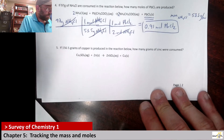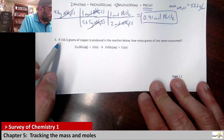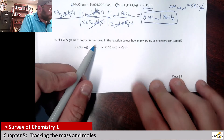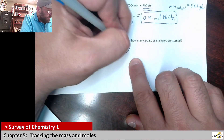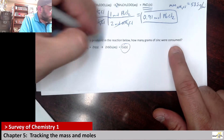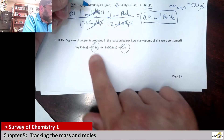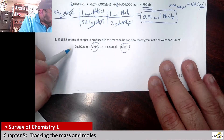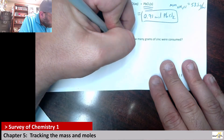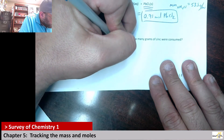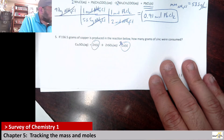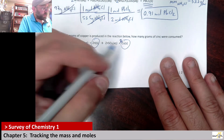Number five: if 156.5 grams of copper are produced in the reaction, how many grams of zinc are consumed? Let's make sure it's balanced — we need a 2 in front of copper. Now it's balanced with a 1-to-2 mole ratio between zinc and copper.